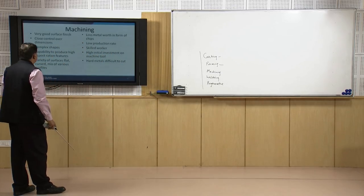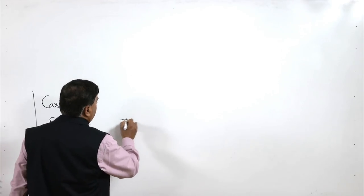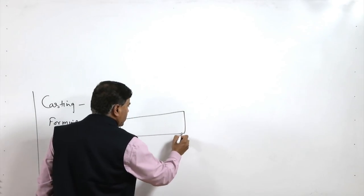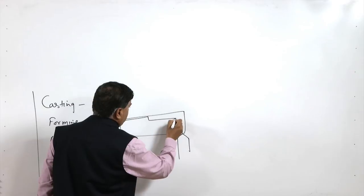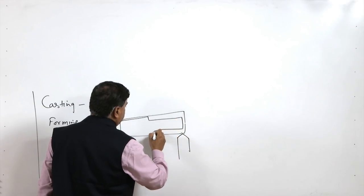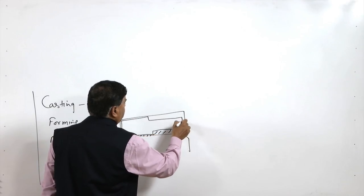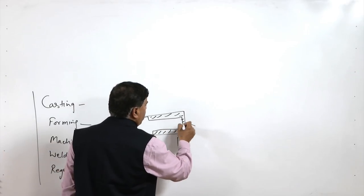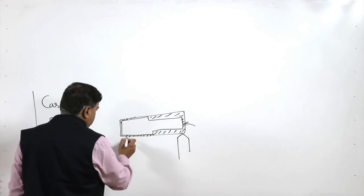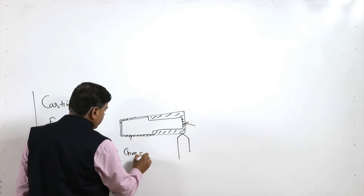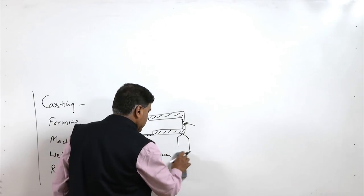Coming to another manufacturing process — machining. In the case of machining, we take the stock material and using a suitable cutting tool, the unwanted extra material is removed. This hatched portion is the portion from which material is to be removed — for example in the turning process, material is removed from the turning region. When this is applied, we get very close control over the surface finish.